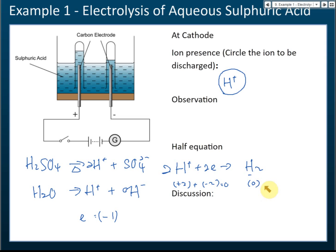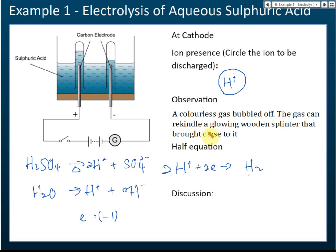That's how we write half equations: first list the substances on both sides, then balance the elements — two hydrogens on each side — then balance the charge by adding electrons. From this, we know hydrogen gas is released at the cathode.